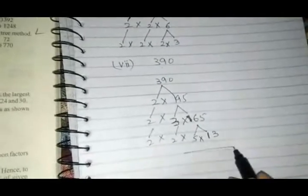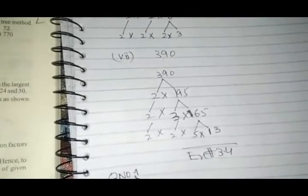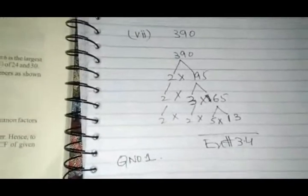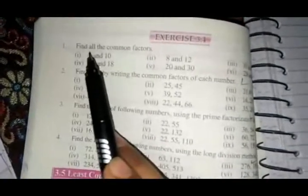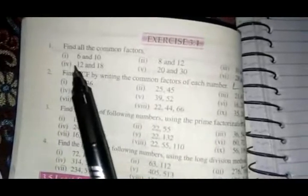Now we have to start exercise number 3.4, question number 1. Question number 1 is: find all common factors of the following. We need to find the common factors.